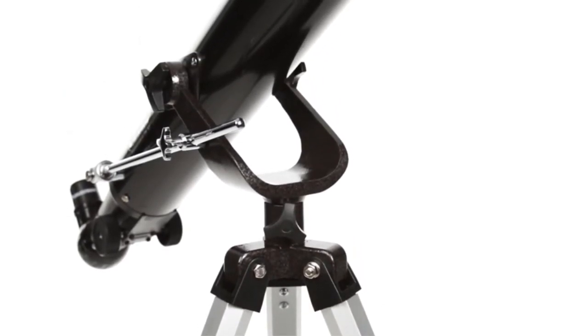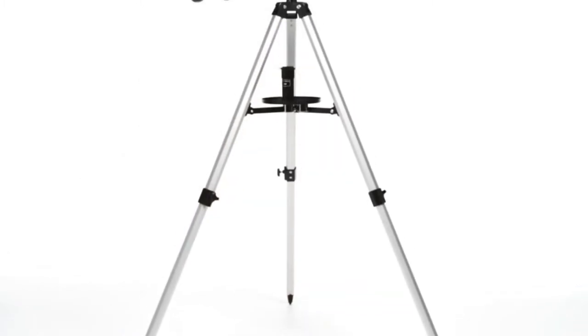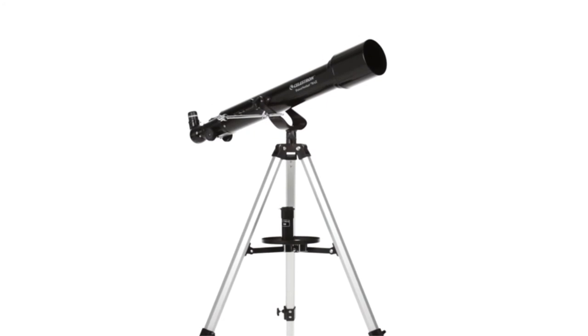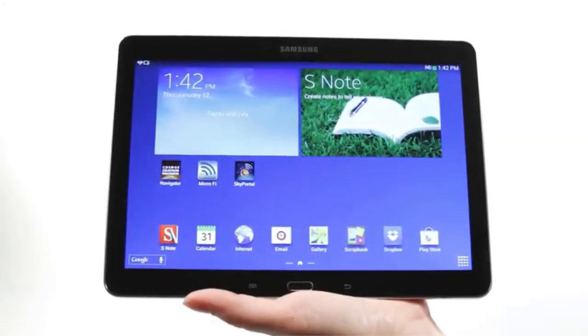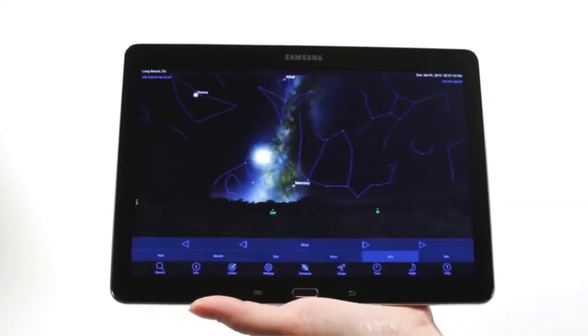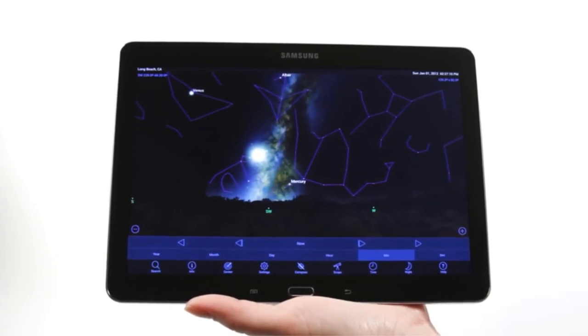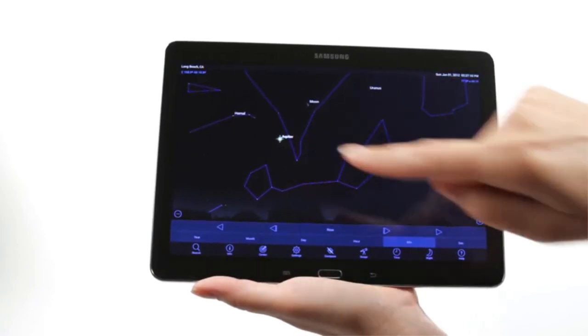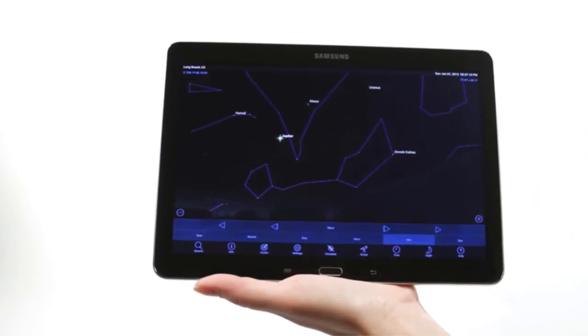The PowerSeeker series is designed to give the first-time telescope user the perfect combination of quality, value, features, and power. This telescope for adults and kids to be used together is compact, lightweight, and portable. Take the telescope to your favorite campsite or dark sky observing site, or simply the backyard.